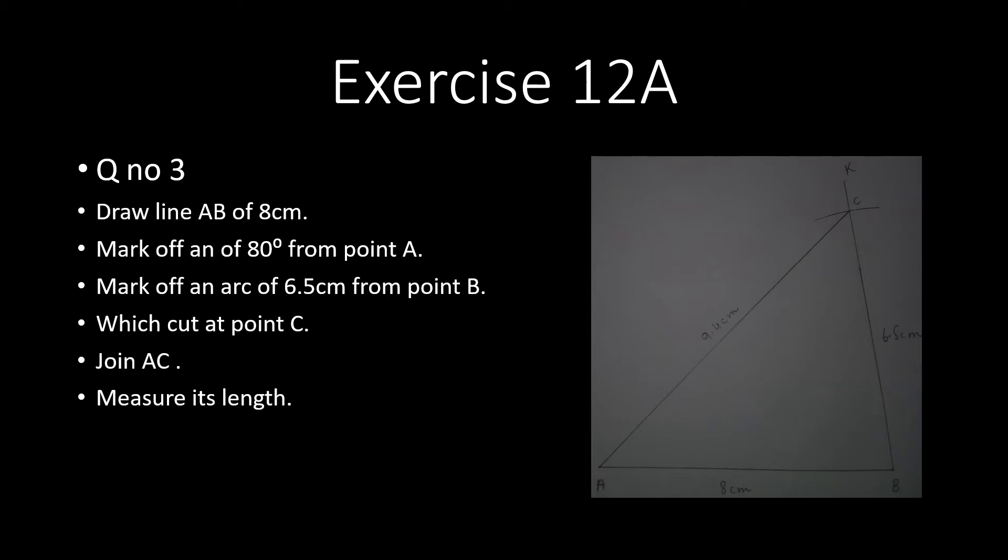After marking a point with the help of the protractor at angle 80, we will join point B and this point by a line called BK. After drawing this line, we will set our compass at the measurement of 6.5 centimeters.